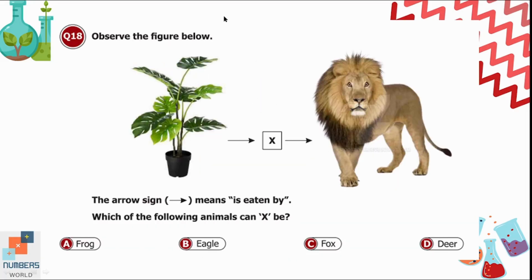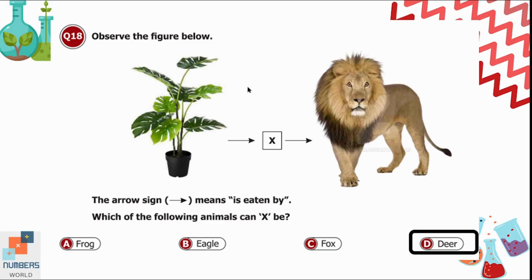Question 18: Observe the food chain figure where the arrow means 'is eaten by.' Which animal can X be? We need a herbivore that eats plants and that a lion eats. Option A is frog, B is eagle, C is fox, and D is deer. The deer eats plants and lions eat deer, so option D is correct.